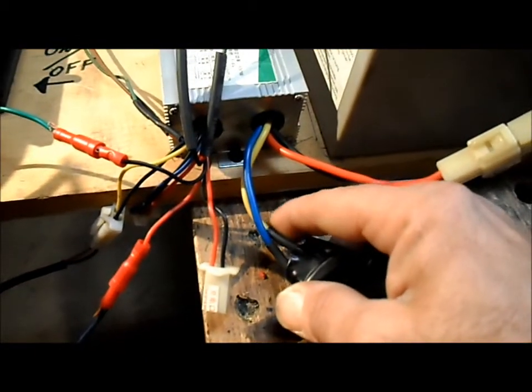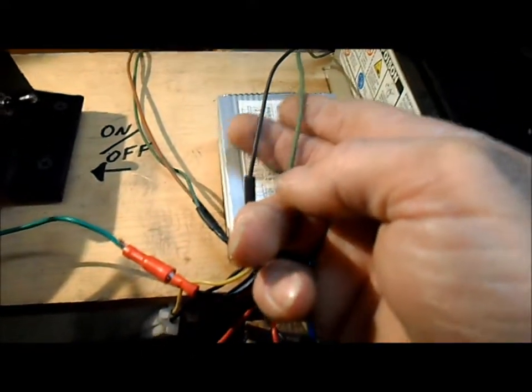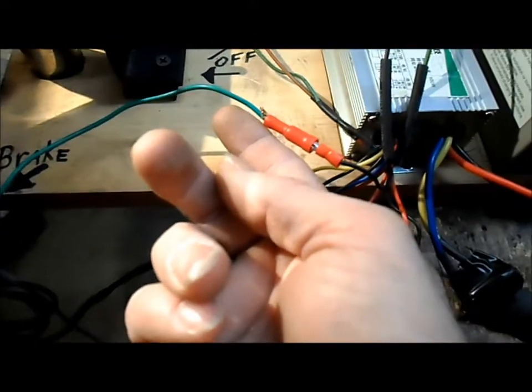We have our motor connection that sends our power to the motor. We have our brake light connection, we have our running light connection, this is our brake lever connection.